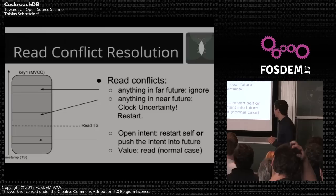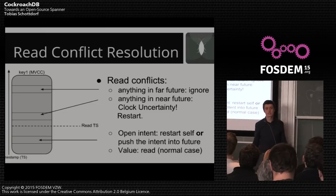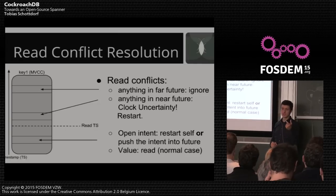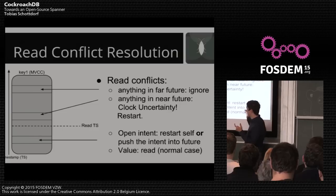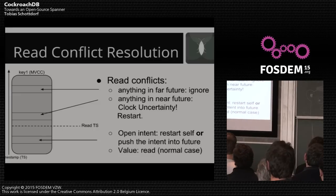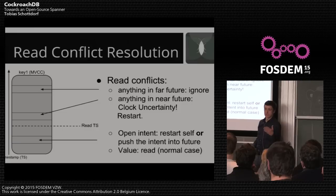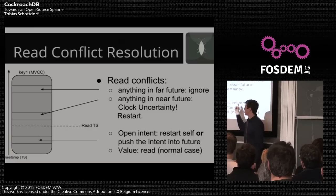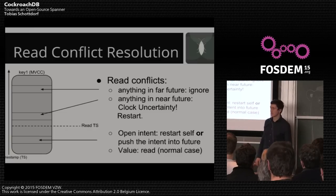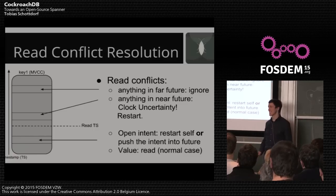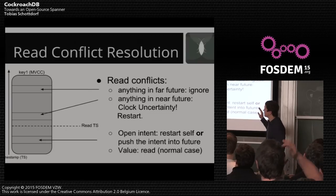If you see something far in the future — beyond your maximum clock offset — you know it cannot possibly have happened before your read, so you can safely ignore that value. If you see something in the past and it's an honest value, you just read the value. If there's an intent in the past, you check: if the transaction is still running you restart or push the intent into the future for snapshot isolation; if the transaction committed, you upgrade the intent to a value and read it; if the transaction was aborted, you delete the intent. In any situation, it's clear how to proceed.